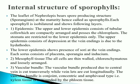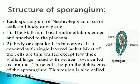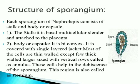The structure of sporangia: each sporangium of Nephrolepis consists of a stalk and a body or capsule. The stalk is the basal multicellular structure attached to the placenta. The body or capsule is biconvex, covered with a single-layer jacket. Most cells are thin-walled except a few thick-walled, large-sized cells arranged in a vertical row called the annulus.